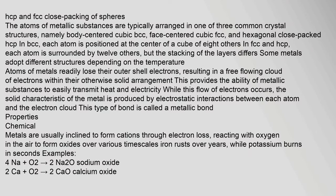The atoms of metallic substances are typically arranged in one of three common crystal structures: body-centered cubic (BCC), face-centered cubic (FCC), and hexagonal close-packed (HCP). In BCC, each atom is positioned at the center of a cube of eight others. In FCC and HCP, each atom is surrounded by 12 others, but the stacking of the layers differs.